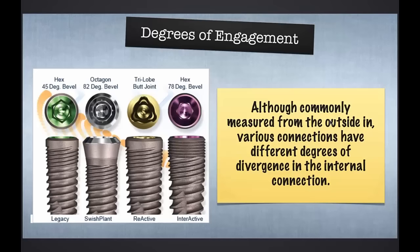There is some disagreement on how to measure the degree of internal connection. Some measure from the outside, so you might hear a conical connection having a 10- or 15-degree taper; some measure from the inside. A butt-joint implant really has no degree of internal ferrule. The internal hex implant has a 45-degree lead-in bevel. The Interactive from Implant Direct has almost an 80-degree internal bevel, and the Straumann-compatible internal octagon is a Morse taper at about 82 degrees.